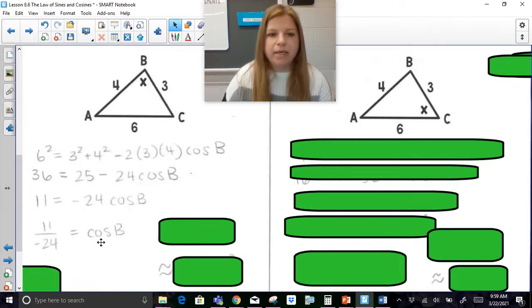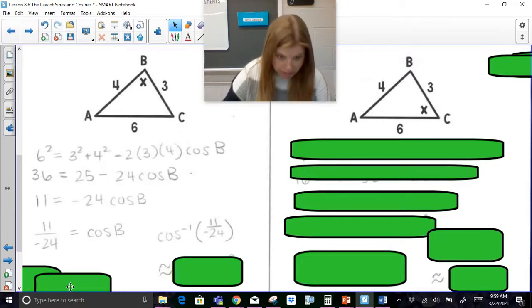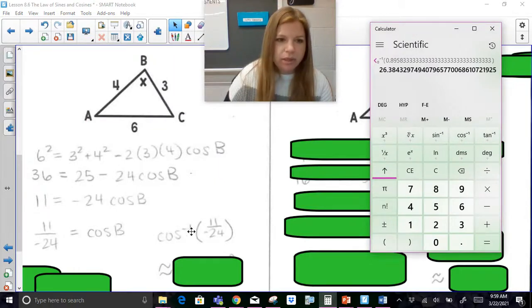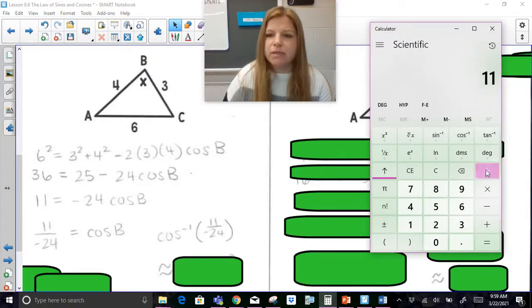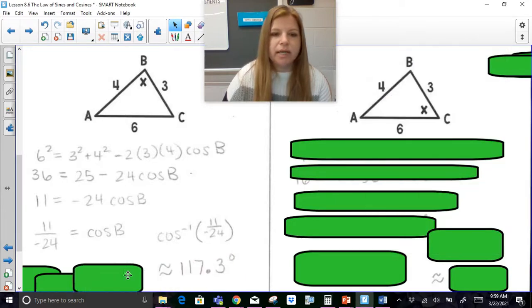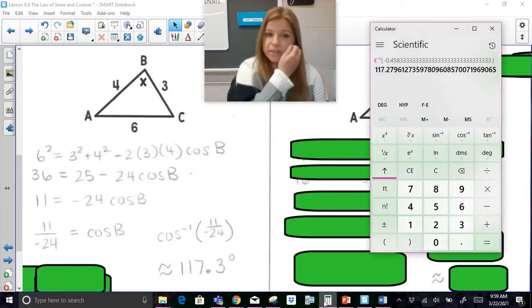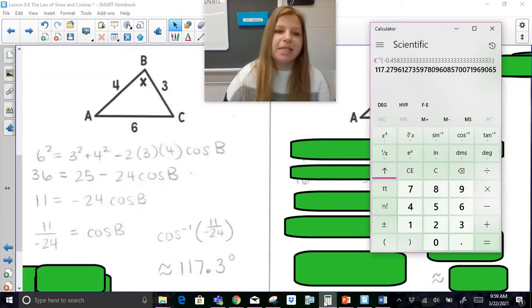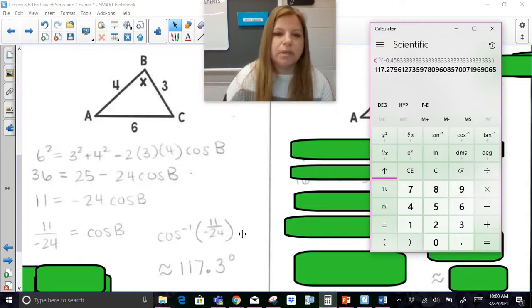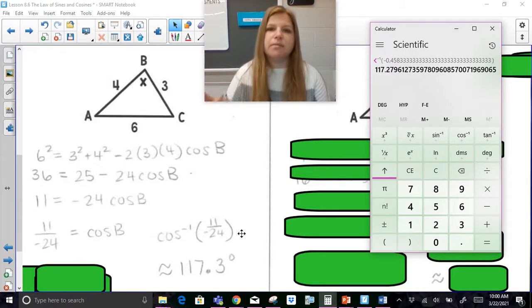Now to find the angle of B, I have to make sure I use the inverse cosine function. It's the inverse cosine of 11 over negative 24. So I'm going to do 11 divided by 24 negative equals. Then I'm going to use my inverse cosine. And I get 117.3. That angle would be 117.3 rounded to the nearest tenths. Now, something else that you're also going to notice is anytime you're actually plugging in a negative number, you're going to get an angle that's bigger than 90 degrees, which is pretty cool. It's going to be an obtuse angle. Anytime the fraction is a positive, you're going to get an acute angle.